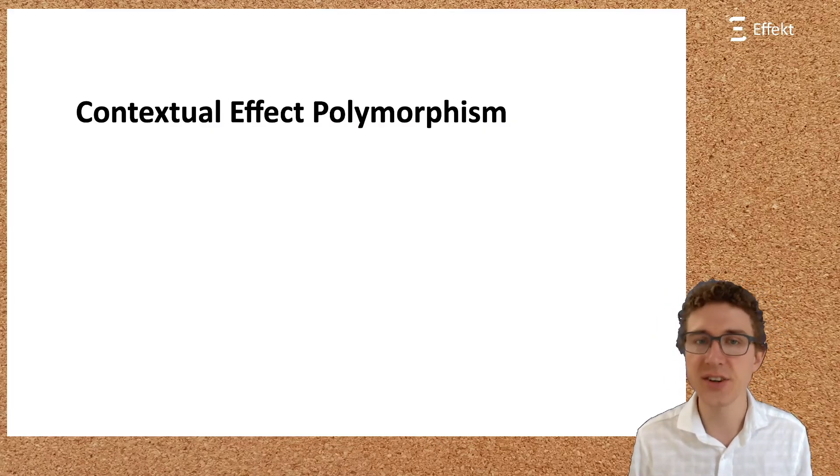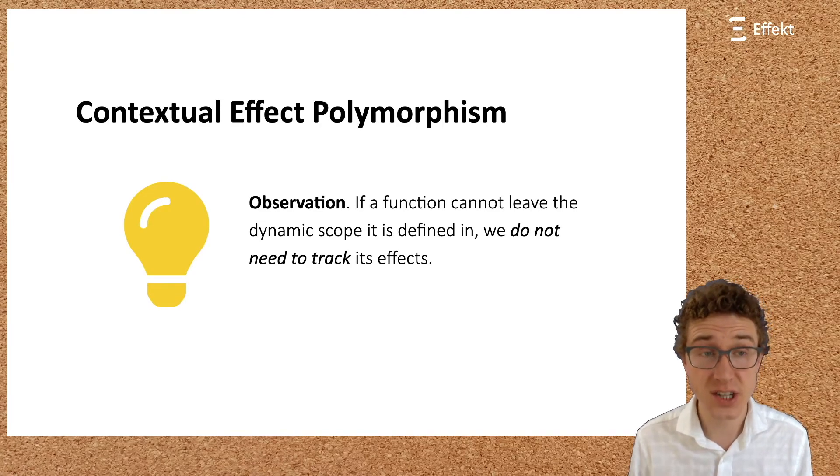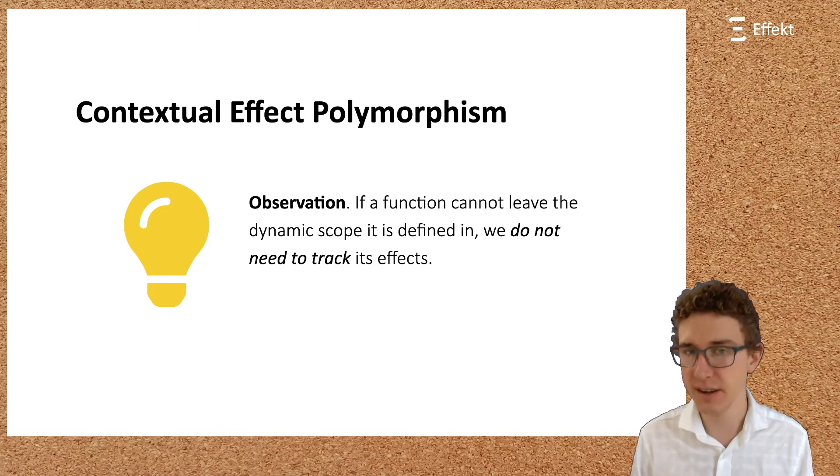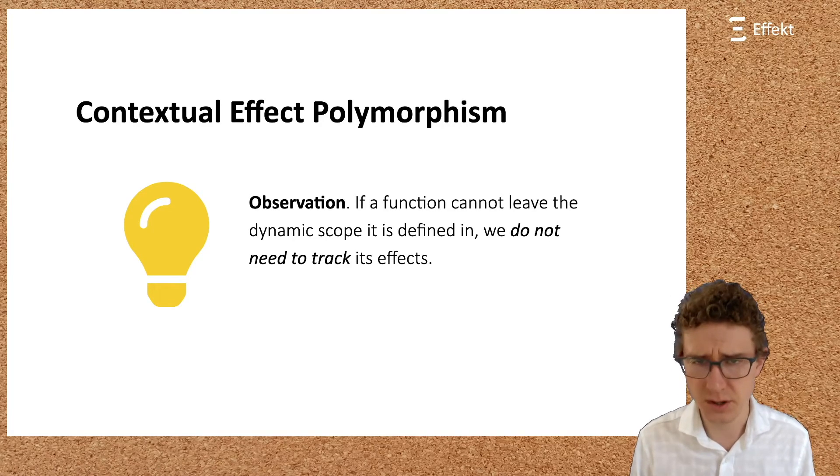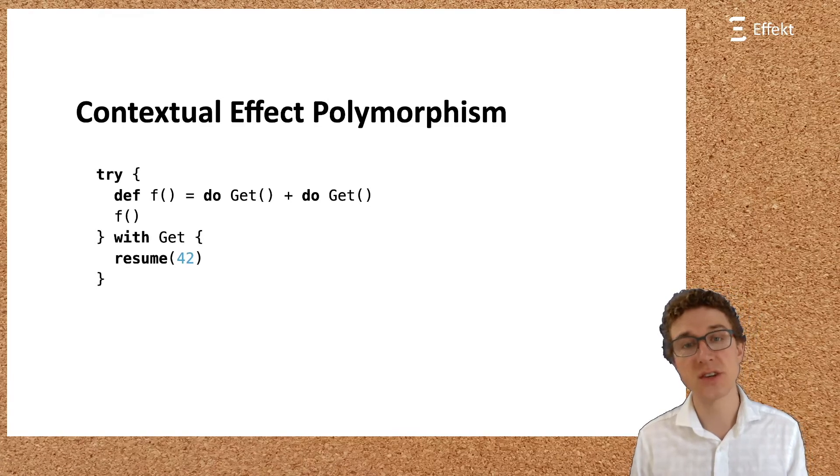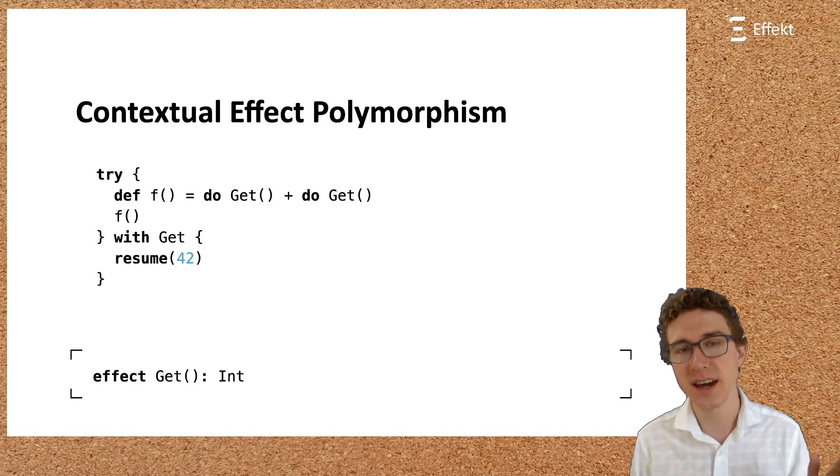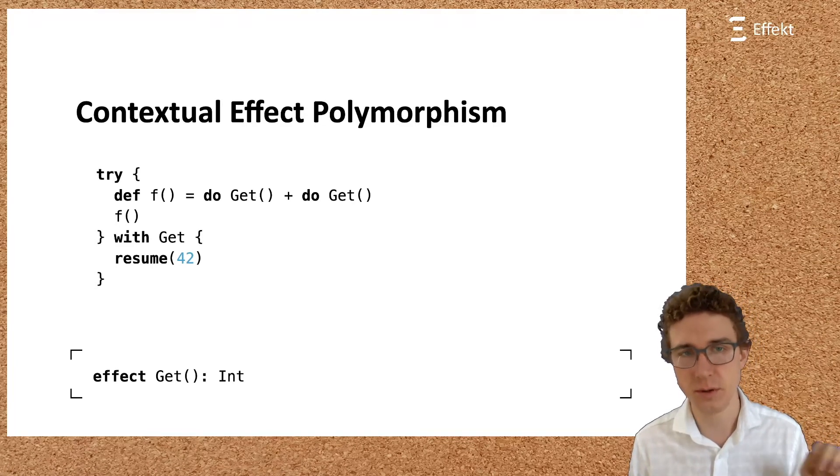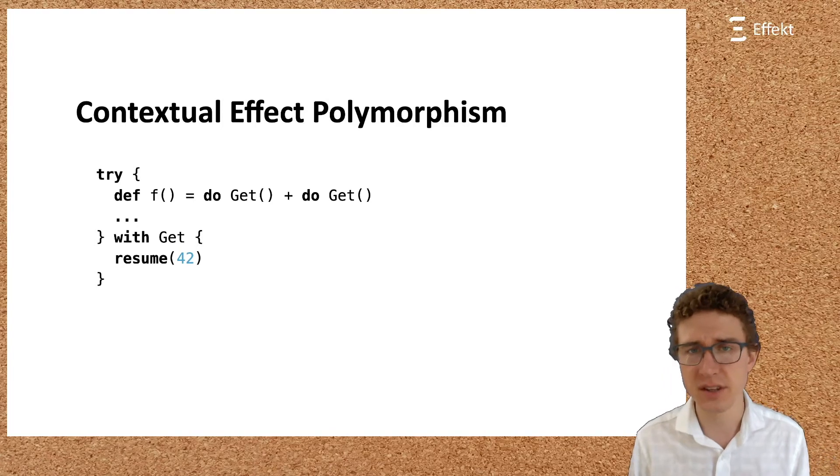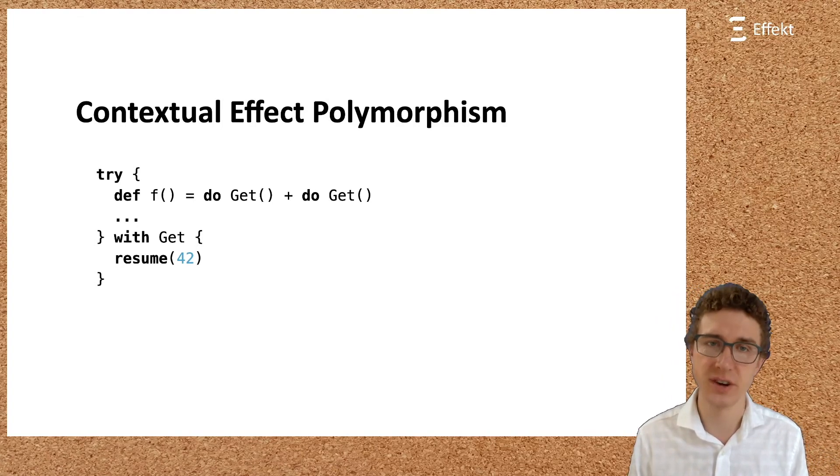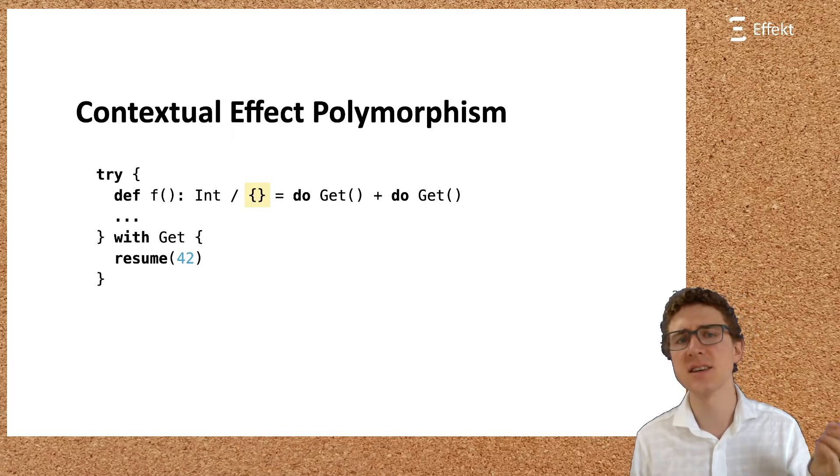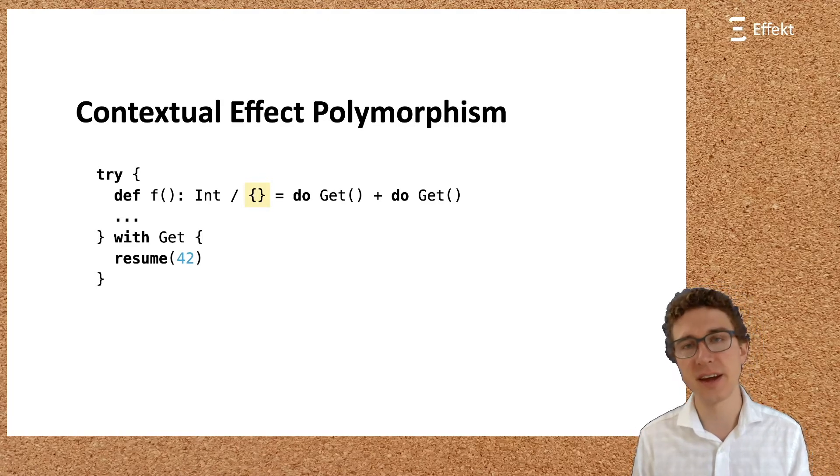The core observation underlying contextual effect polymorphism is the following. If a function cannot leave the dynamic scope it is defined in, we do not need to track its effects. Everything in the effect language is built around this observation. While this might be obvious to some of you, let me illustrate this observation with an example. Let us assume the following piece of code. Here, the function definition f uses a get effect with the following signature. We enclose f in a handler for the get effect, which handles get by always resuming with 42. So, this example will yield 84. If we know that f cannot leave the dynamic scope of its enclosing handler, then it is safe to not track effects on f. In particular, we can annotate the local function f with an empty effect set. Again, this is only safe if we can guarantee that f cannot leave the scope it is defined in.